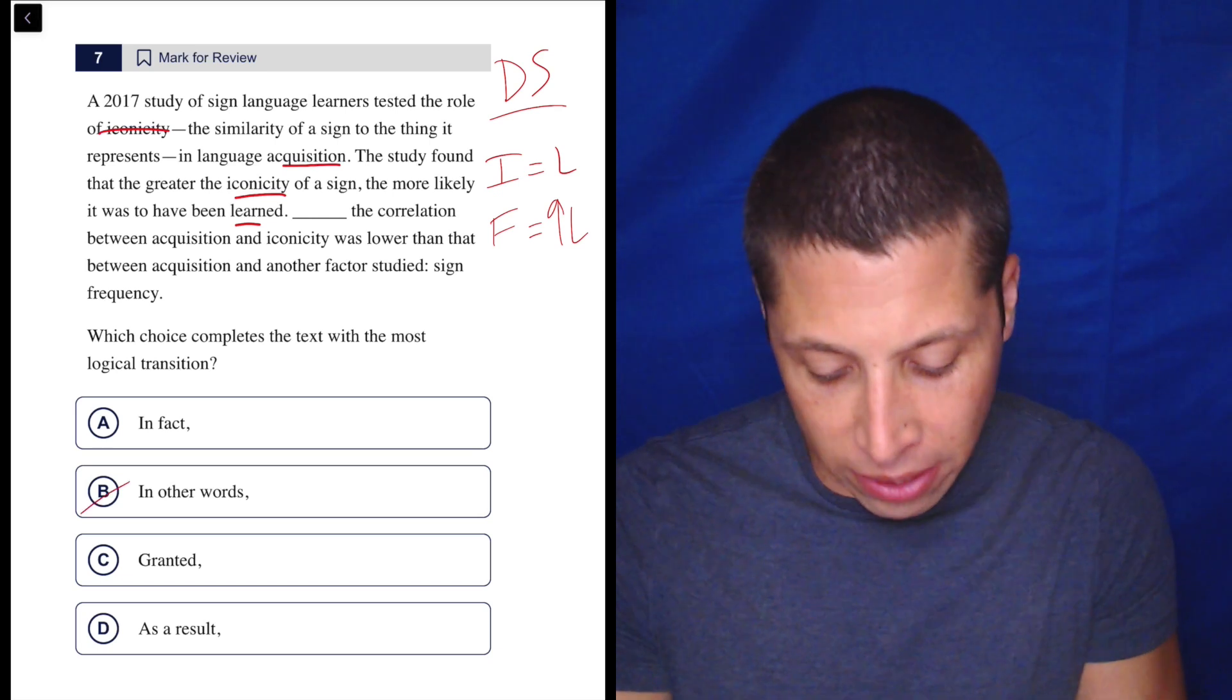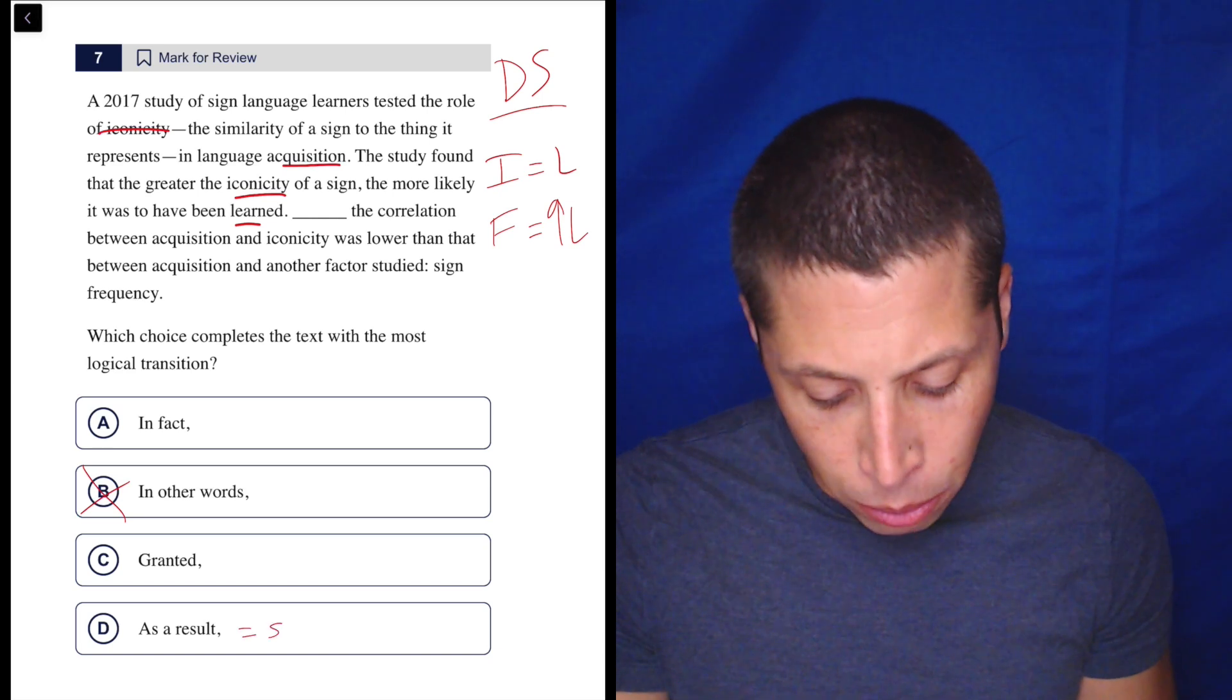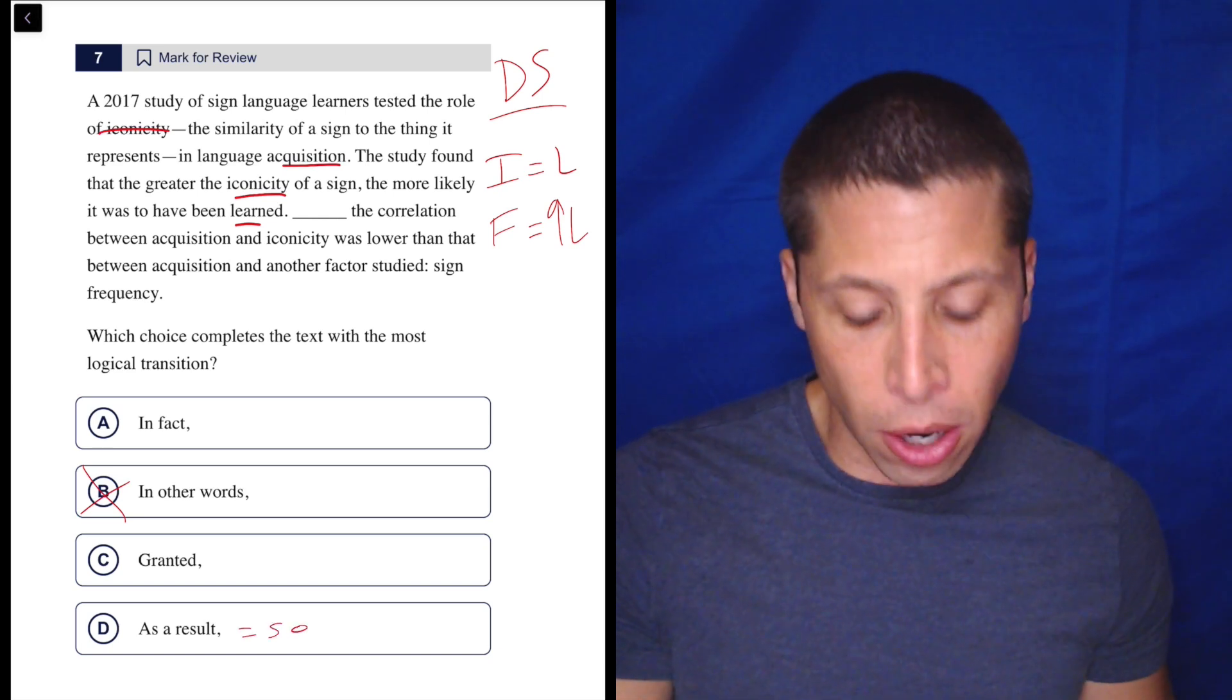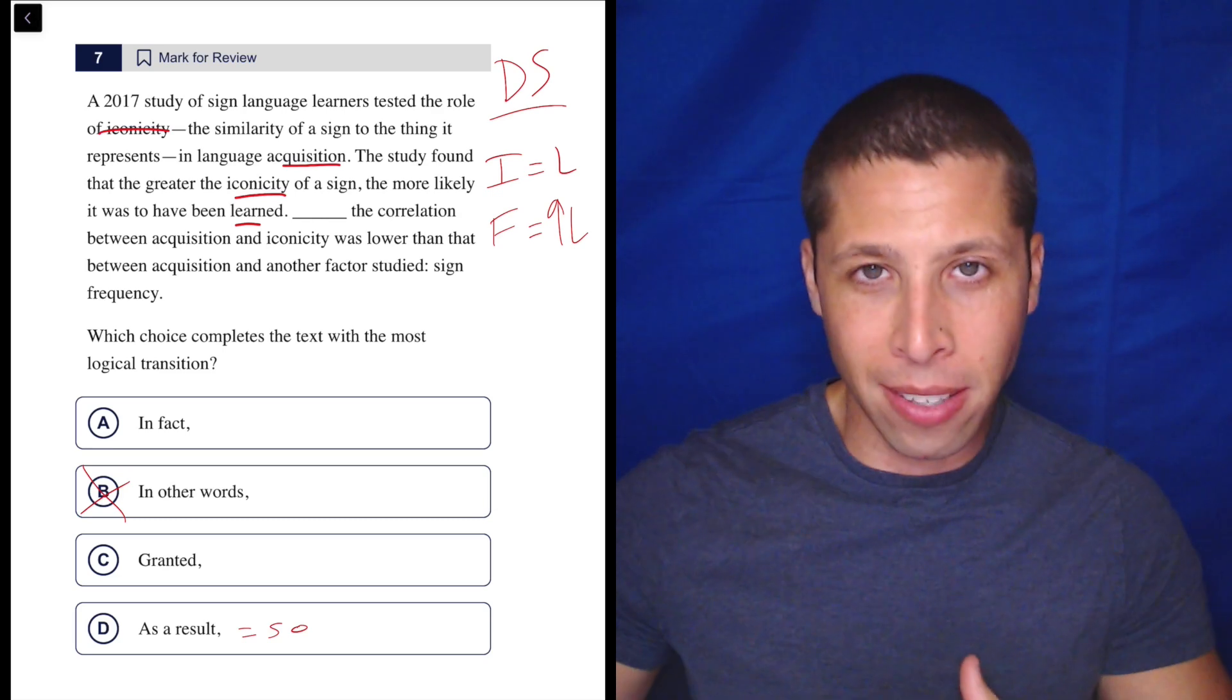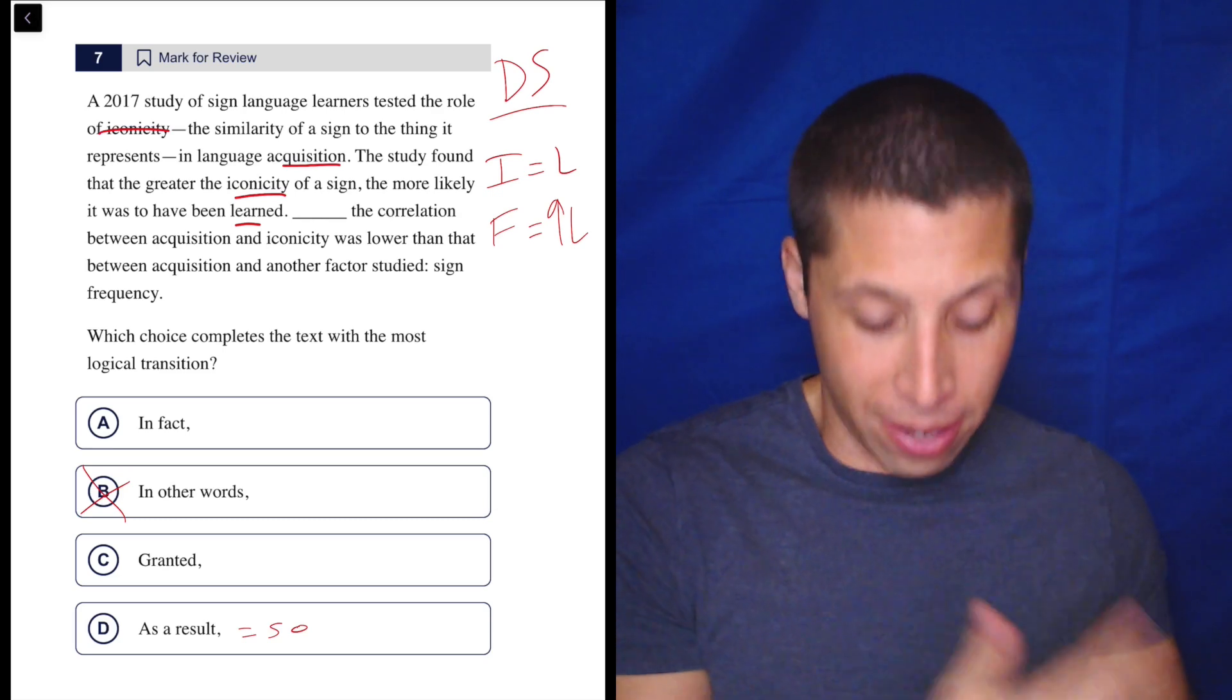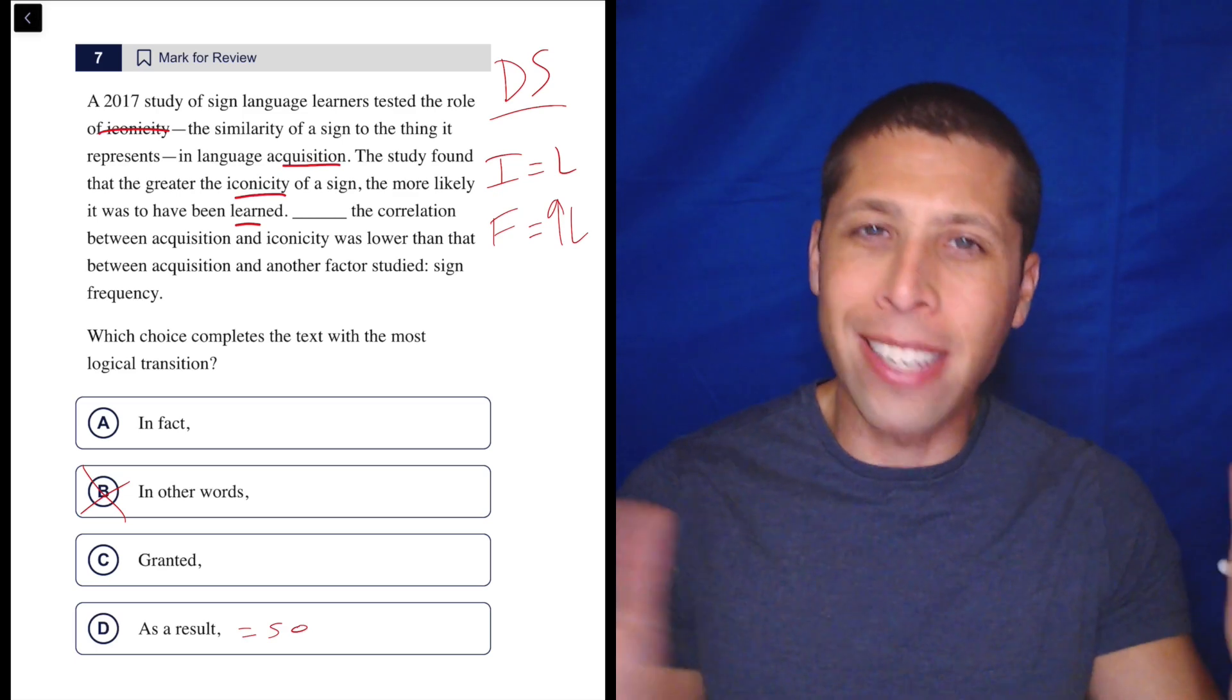So in other words, definitely it's not happening. We're talking about two separate things. It's not in other words. Is it a so and as a result? I don't think so. Why would the sentence about iconicity and its impact cause the other thing, the frequency, to be more important? Those are separate ideas.